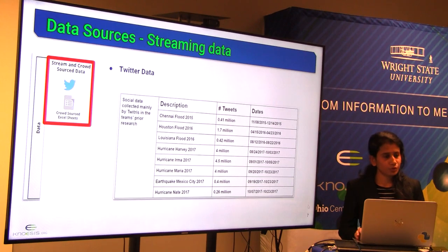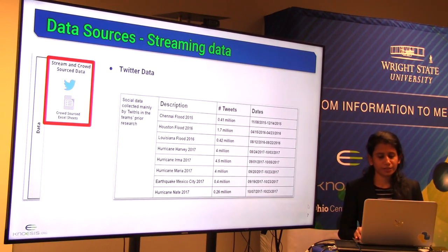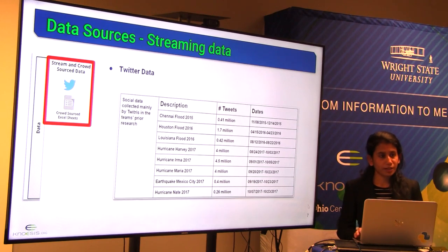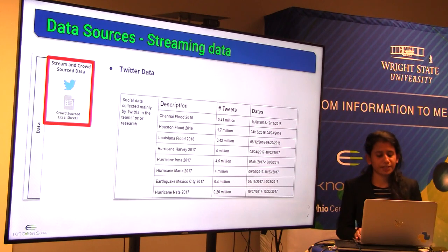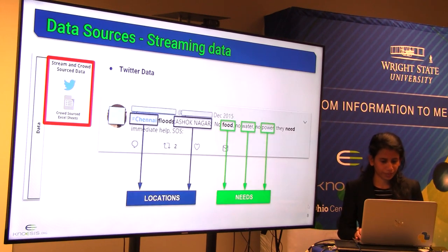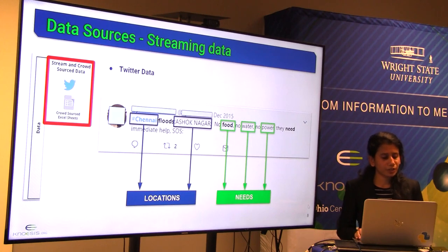Twitter forms the major source of information for our work. Thousands of people post every day about their daily activities, and numerous tweets are recorded during a major natural disaster. Surveys have proved that among such big data there might be biased, false, or unverified information, but there is still a significant number of relevant and meaningful information that can be gleaned out. We crawl a significant amount of data for major disasters; the text streams were filtered using hashtags and disaster event-related keywords. For example, a tweet posted during Chennai 2015 said: 'Hashtag Chennai floods, Ashok Nagar, no food, no water, no power. They need immediate help, SOS.'